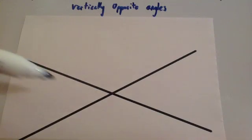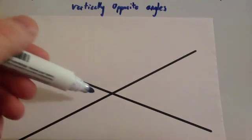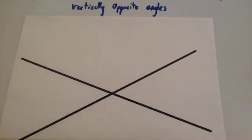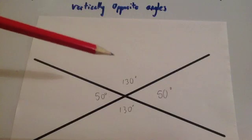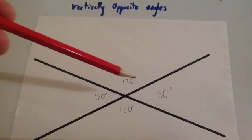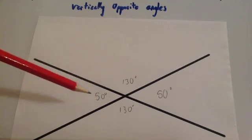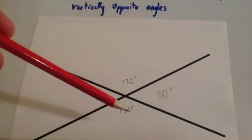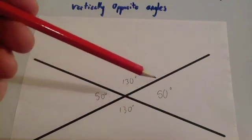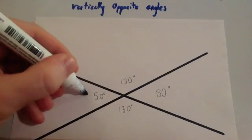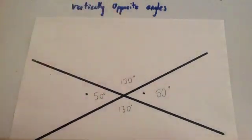I'm going to measure the size of this angle, this angle, this angle, and this angle. I've measured the angles and found that the obtuse angle was 130, this acute angle was 50, this obtuse angle was 130, and this acute angle was 50. I've noticed that the angles that are opposite each other — this one and this one — are equal to each other.